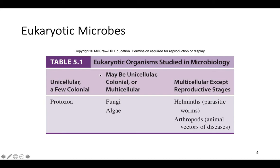Fungi and algae can be unicellular or colonial. Colonial organisms mean they live in a group but are unicellular — they just live together and don't need each other to survive. Multicellular organisms mean you need all the other cells to survive. So colonial and multicellular may seem similar, but they're not: more than one cell living together where the cells don't need each other versus where the cells all need each other. Helminths and arthropods — like worms and ticks — are all going to be multicellular, and we'll talk about these guys found in the medical world.